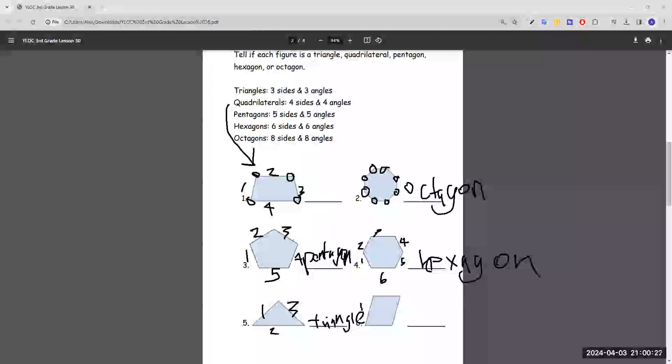Number six, one, two, three, four sides. That would also be a quadrilateral, same thing as number one.